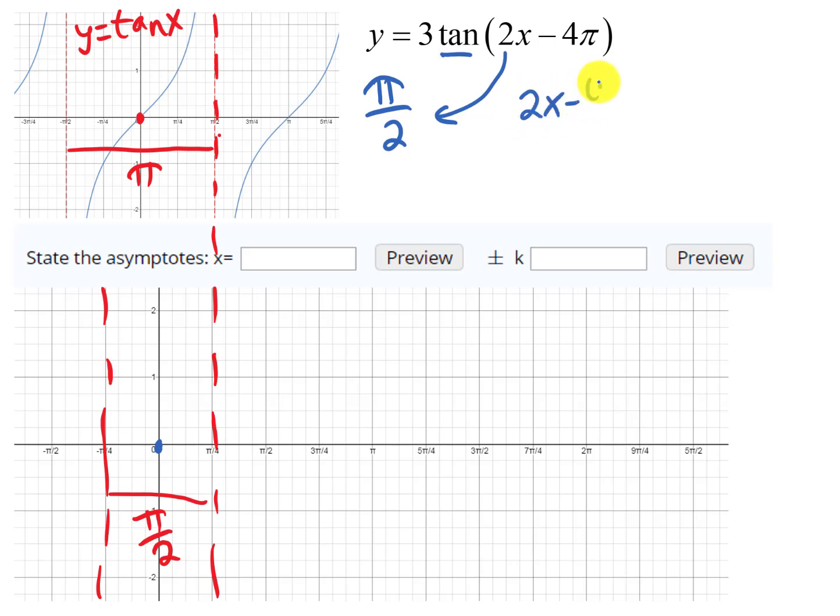So let's figure out the shift. It's going to be 2x minus 4π equals 0, so 2x equals 4π, which means x equals, dividing that by 2, 2π.